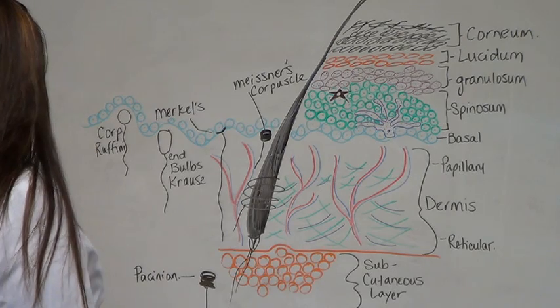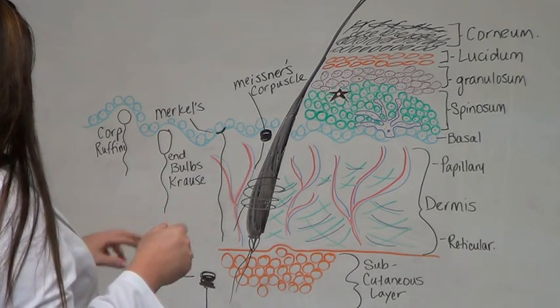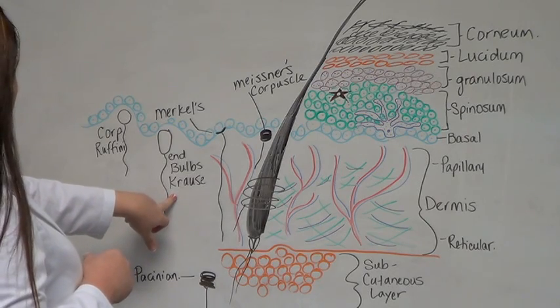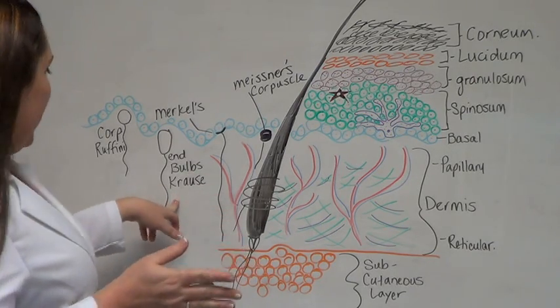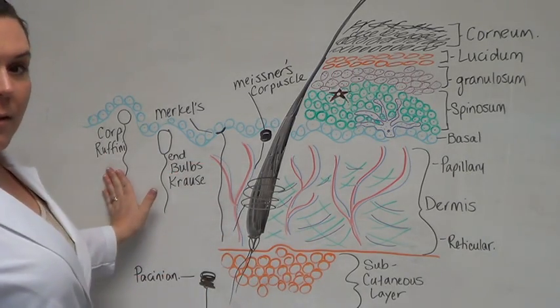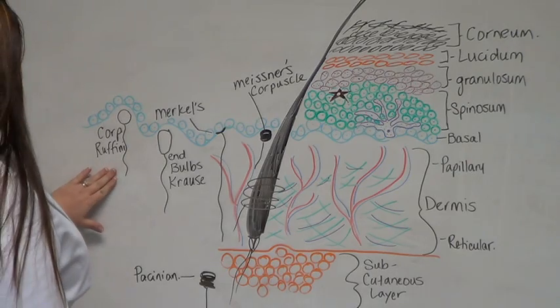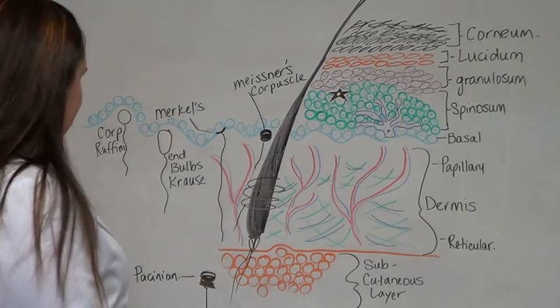Next, moving on, we have the thermoreceptors. First one, the end-bulbs of Krause. These are found in the skin, lips, tongue, penis, clitoris, fingers, and they detect cold. The next one, the corpuscles of Ruffini. These are found in the fingertips, and they will detect heat.